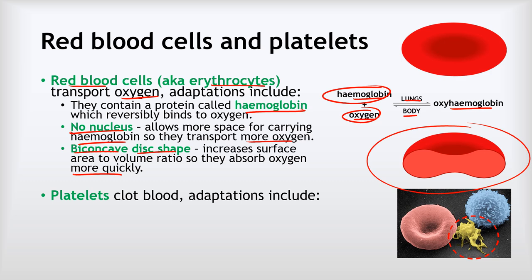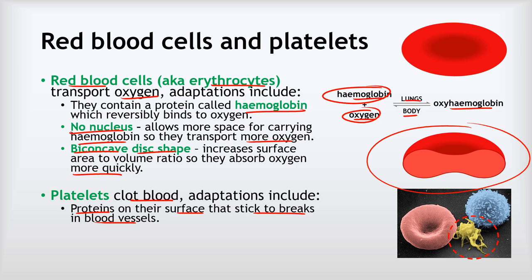The job of platelets is to clot the blood. They have proteins on their surface that stick to breaks in blood vessels. When we cut ourselves, blood vessels are broken and platelets stick to those breaks. They then secrete proteins that cause the blood to clot, forming a scab so that blood stops leaking and healing can begin.